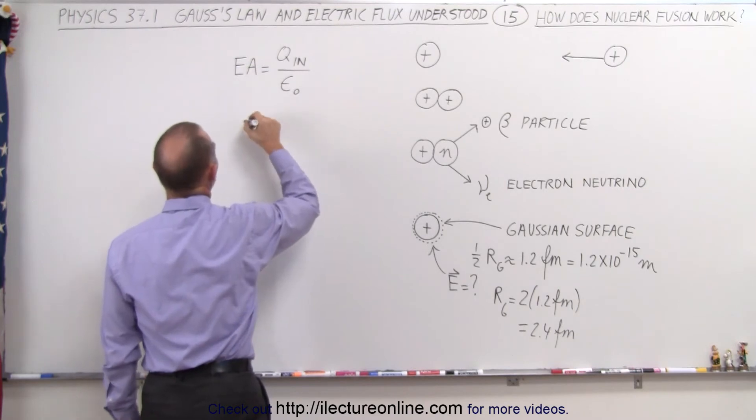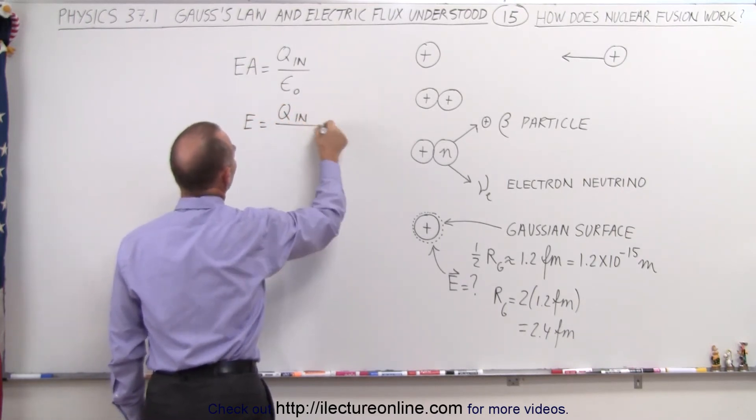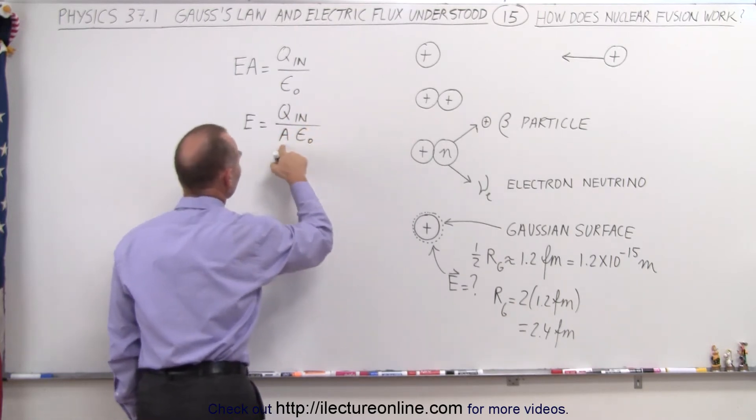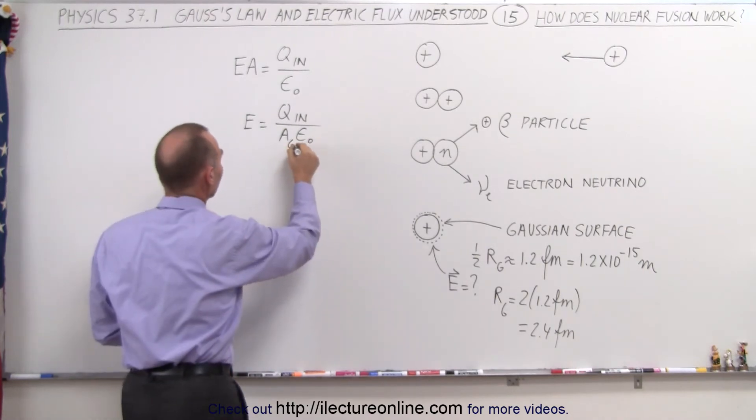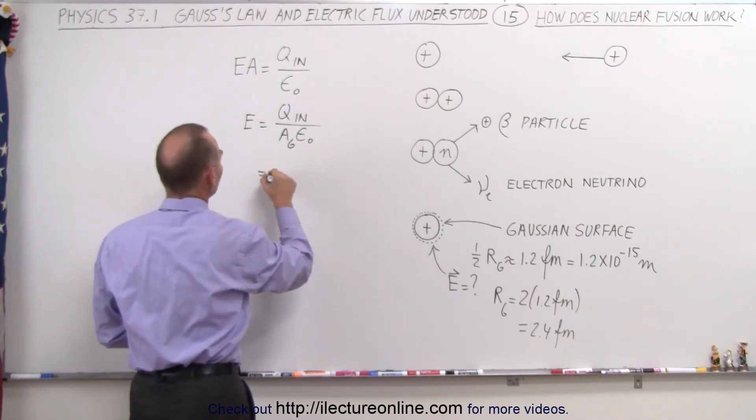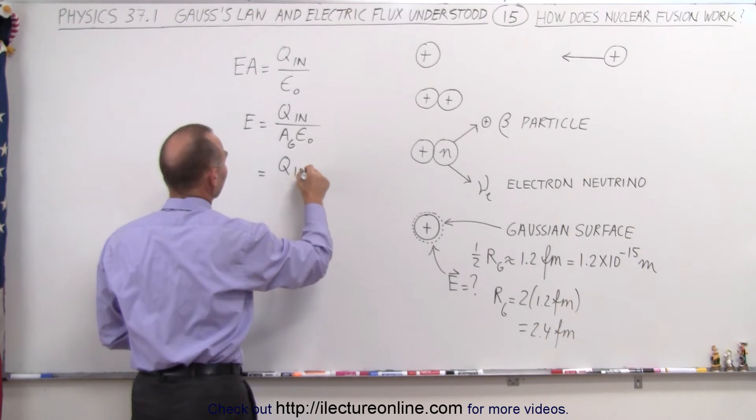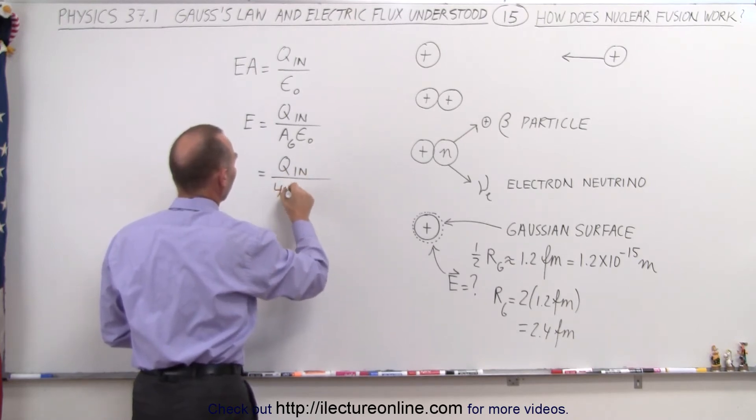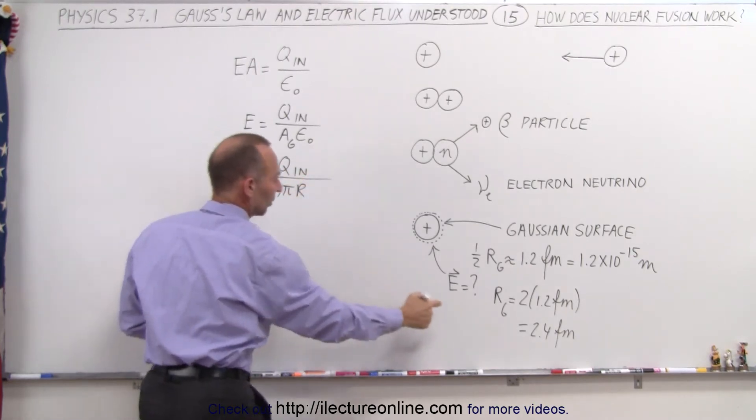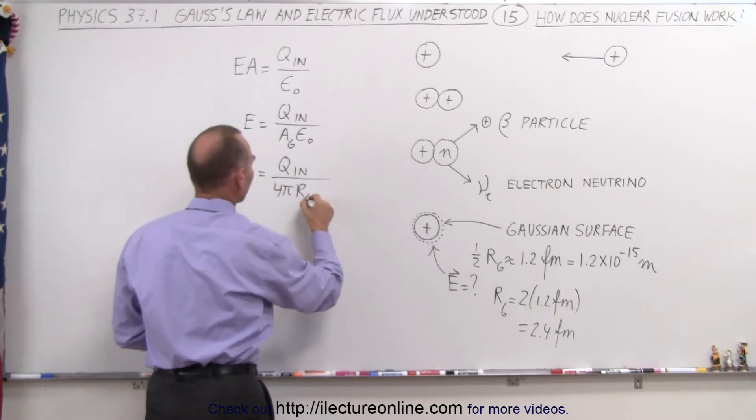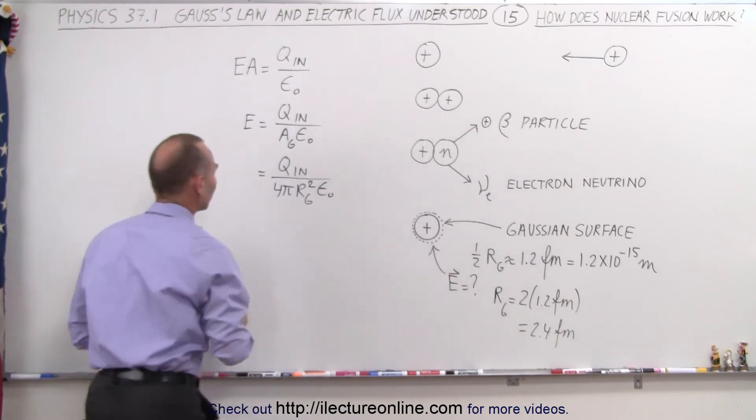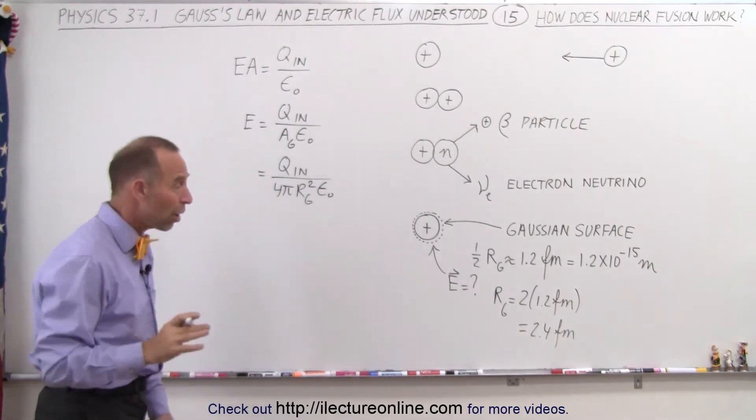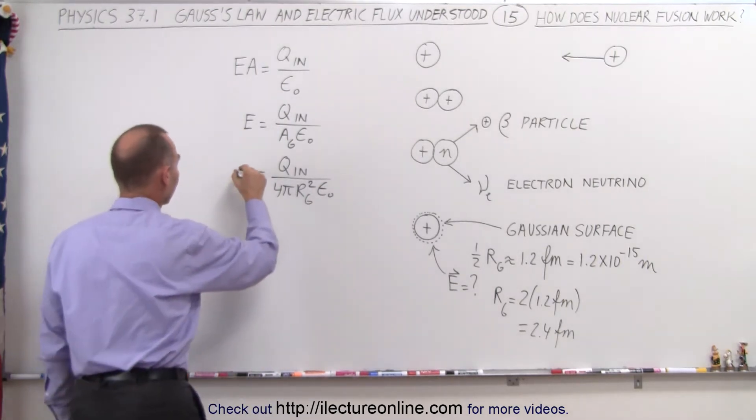So we then have the electric field is equal to Q inside divided by the area divided by epsilon sub nought. And of course, the area would be the surface area that would be the Gaussian surface. So this is equal to Q inside divided by 4 pi radius, that would be the Gaussian radius squared, so that would be the area times epsilon sub nought. So let's find out how strong or powerful that electric field is.